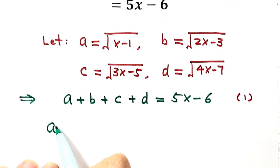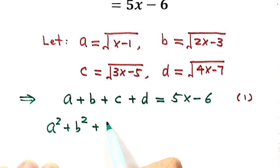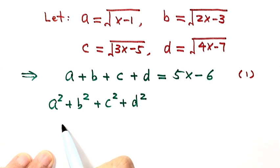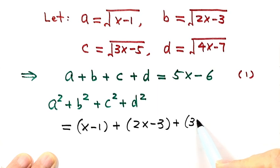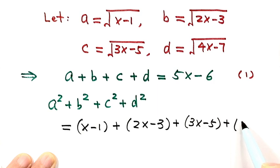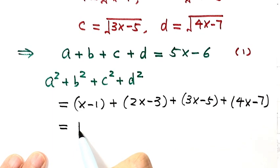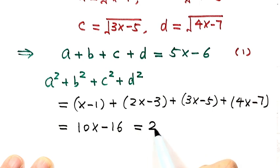Consider a squared plus b squared plus c squared plus d squared — squaring each one individually. The first gives x minus 1, the second gives 2x minus 3, the third gives 3x minus 5, and the last gives 4x minus 7. Combining like terms gives 10x minus 16. Taking out the common factor of 2, we have 2 times (5x minus 8).